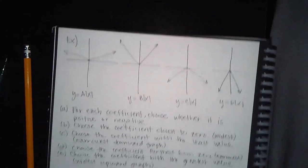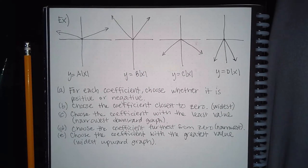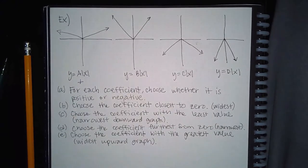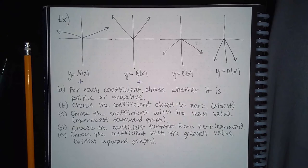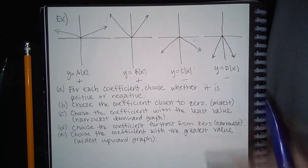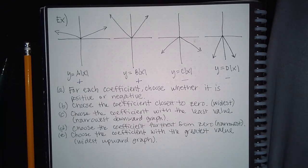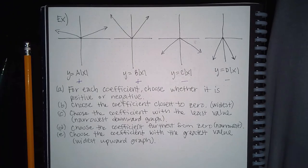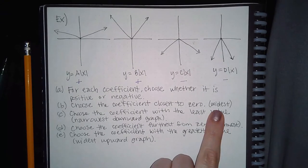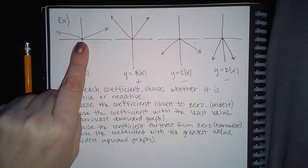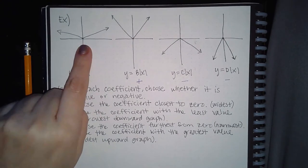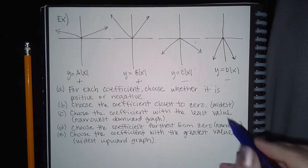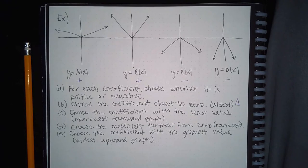They may give graphs instead of equations and ask for this information. For each coefficient, choose whether it is positive or negative. Graph A opens upward — positive. Graph B opens upward — positive. Graph C goes downward — negative. Graph D goes downward — negative. For part B, choose the coefficient closest to zero, which means the widest graph. Graph A looks the widest — like doors open the most — so the answer for part B is A.